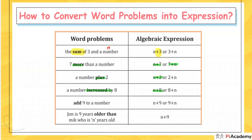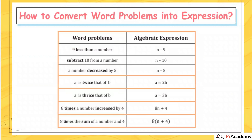Now let's talk about subtraction. 'Nine less than a number' — here n comes first. Nine less than n means n minus 9; you must be careful about order. 'Subtract 10 from a number' means n minus 10. 'A number decreased by 5' means n minus 5. Now for multiplication: 'a is twice that of b' means a equals 2b — 'twice' means two times.